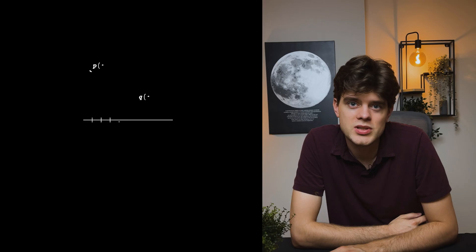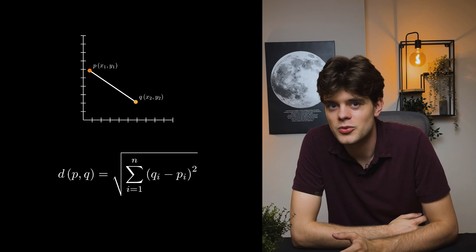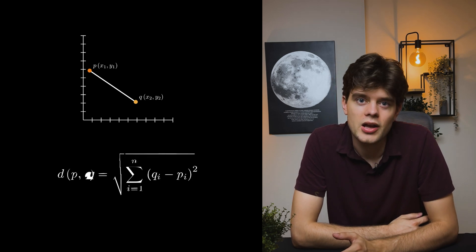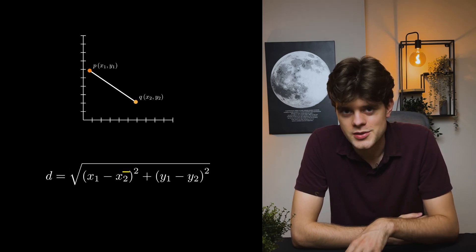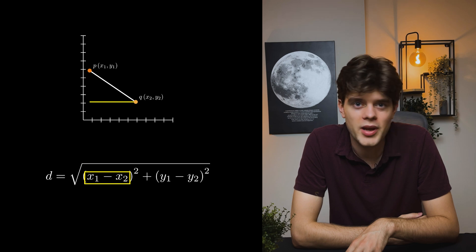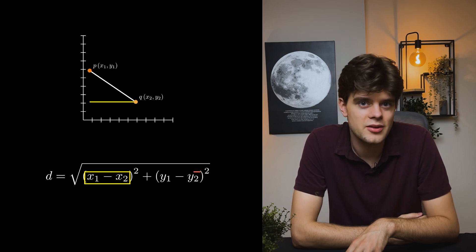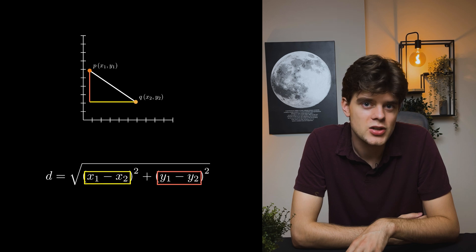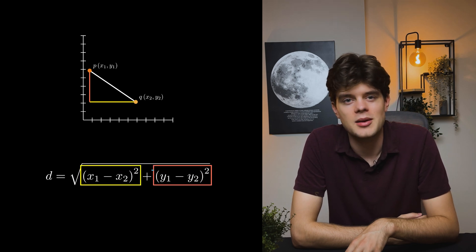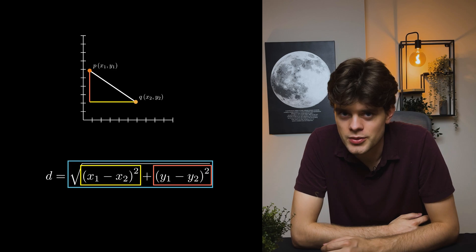The formula is quite straightforward too, as we use the Pythagorean theorem. We simply take the square root of the sum of squared differences between the points' coordinates. We take two points, subtract the x coordinate of the first point from the x coordinate of the second point, do the same with the y coordinates, square these differences, sum them up, and the last step is the square root.